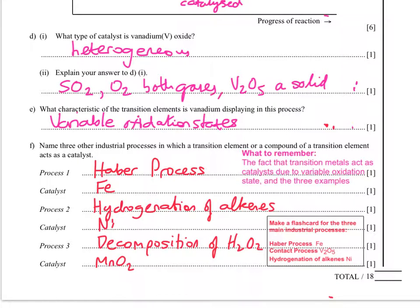Just popped up in pink: transition metals act as catalysts due to variable oxidation state, and the three examples are in the box. That's it — thanks for listening, and see you soon.